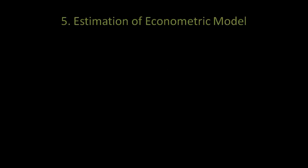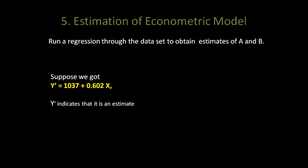In the fifth step we have to estimate this econometric model. We run a regression through the data set to obtain the estimates of A and B. Let us suppose that after running the regression we got the following regression line.